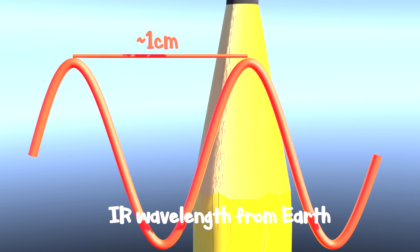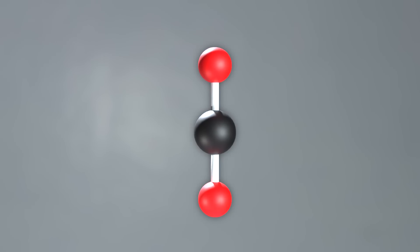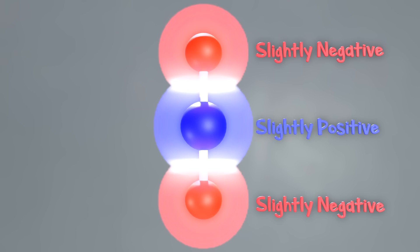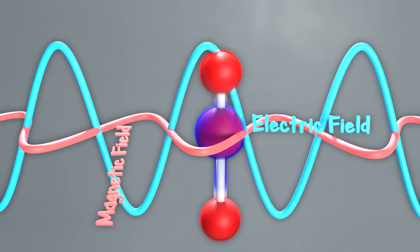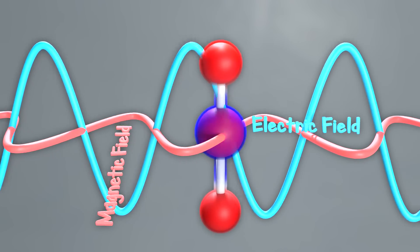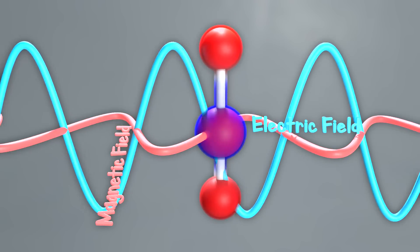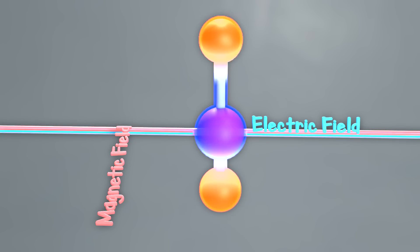In most molecules, there exists slight variations in charges throughout them. Some regions will be more negative or positive than others. As our light wave passes through them, the oscillating electric field component can oscillate these charge imbalances. If this vibration is a correct frequency, then our entire molecule becomes vibrationally excited and the light energy is absorbed into the kinetic energy of this motion.